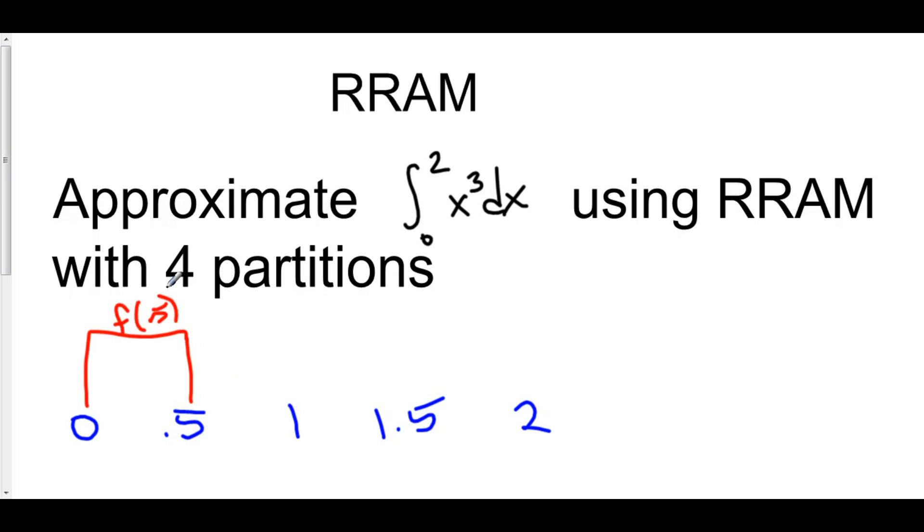Our second rectangle, we go from 1 and on over. So the height of this rectangle is f of 1, because we're going from 1 to the top of the function value at 1.